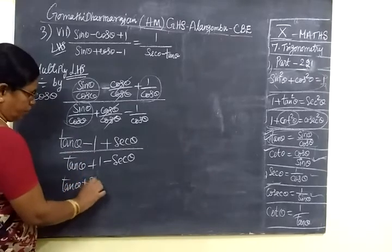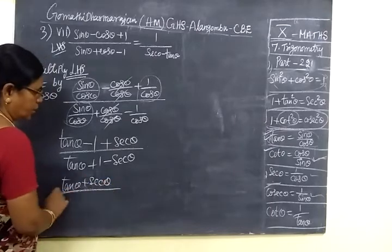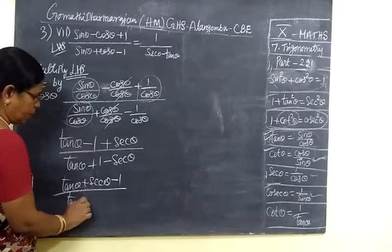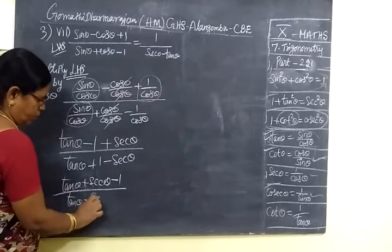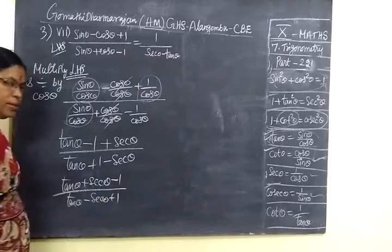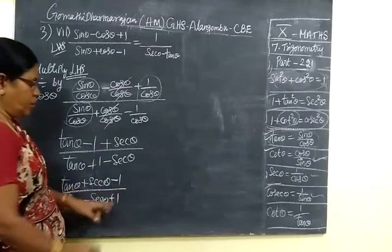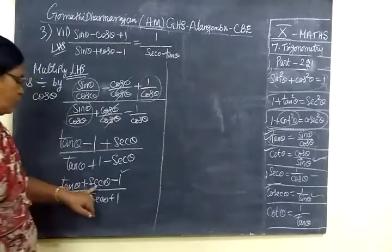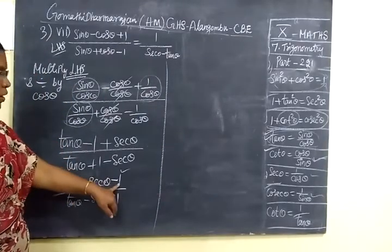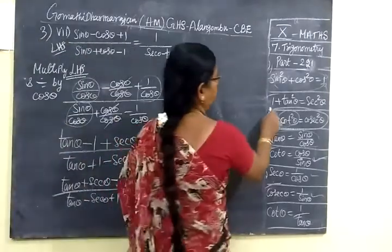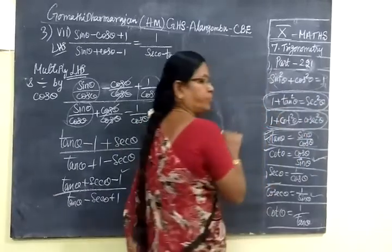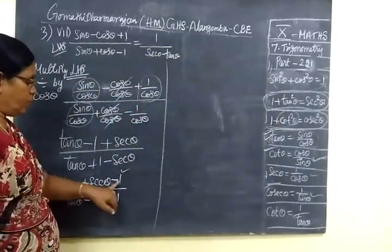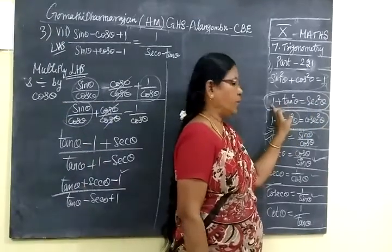So we get tan θ plus sec θ minus 1 in the numerator. We continue and add minus 1, giving minus sec θ plus 1. We divide by the denominator, which is sec θ plus 1.